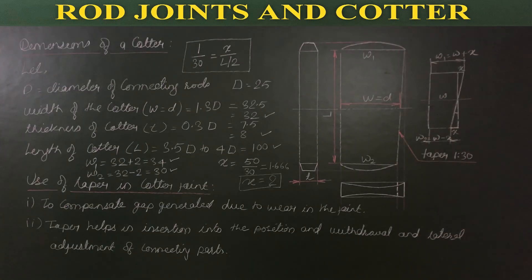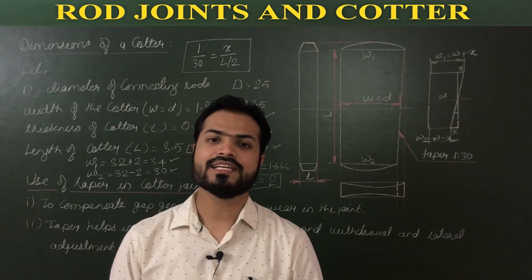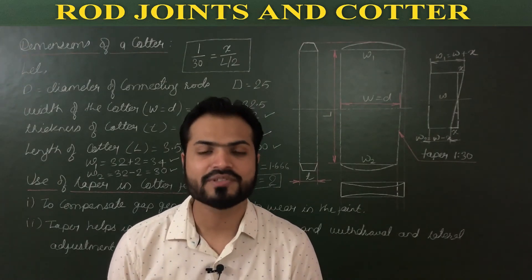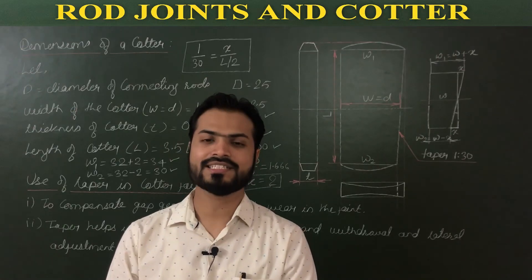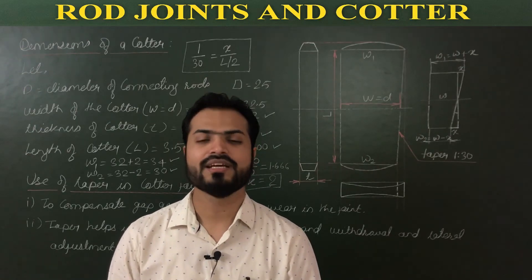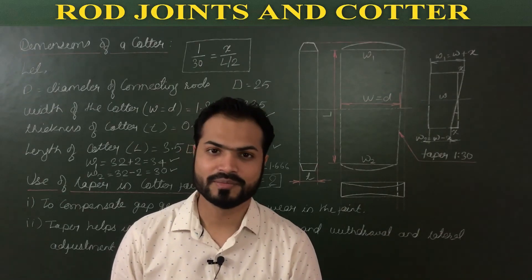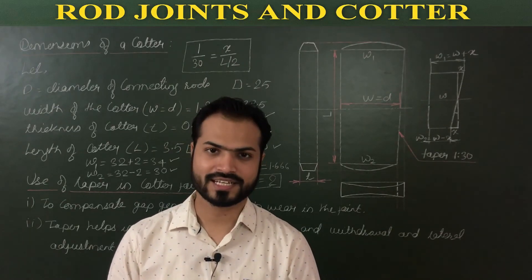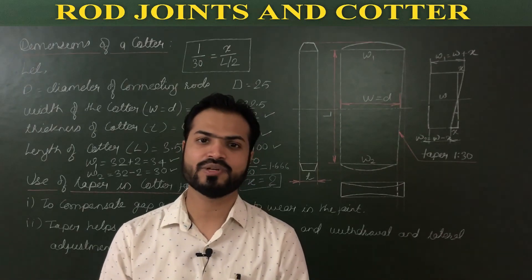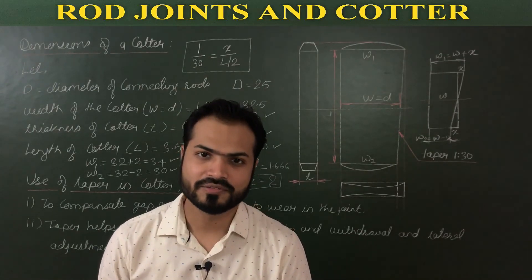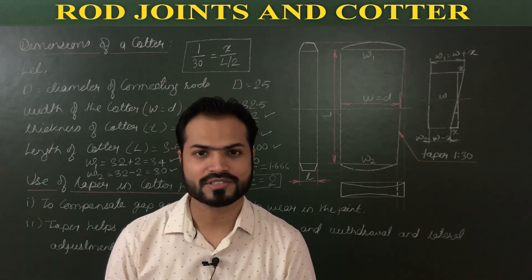This is all about the basics of rod joints and cotters. In the next class, we will start the construction work — assembly and disassembly drawings of the first topic, sleeve and cotter joint. If you have any doubt or problem in any topic of engineering graphics or machine drawing, classes 11th, 12th, and university scheme, please write your comments in the comment box. Thank you.